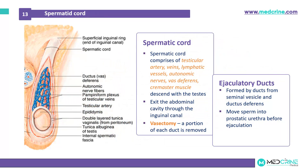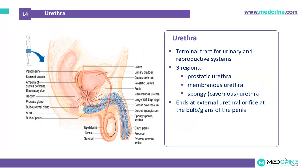The spermatic cord comprises testicular arteries, testicular veins, lymphatic vessels, autonomic nerves, the vas deferens, and cremaster muscles, and descends with the testicles during development. The spermatic cords pass through the abdominal cavity via the inguinal canal with the testicles. The ejaculatory duct is formed by the duct from the seminal vesicles and the ductus deferens, and moves spermatozoa into the urethra before ejaculation. The urethra is the terminal tract for the urinary and reproductive systems, containing three regions: the prostatic urethra, the membranous urethra, and the spongy urethra, ending at the external urethral orifice at the glans of the penis.